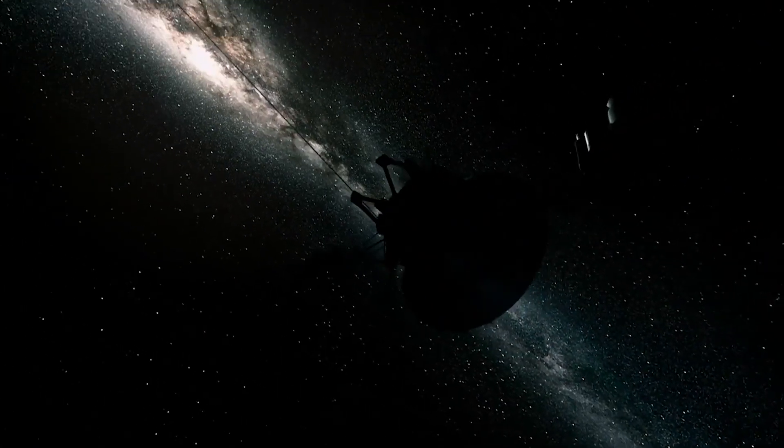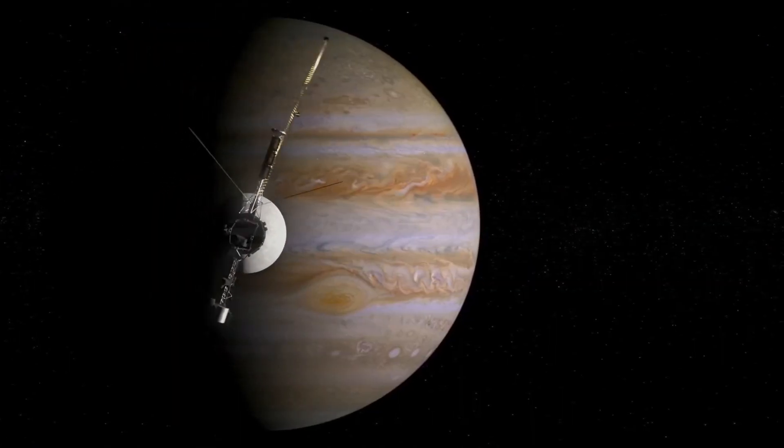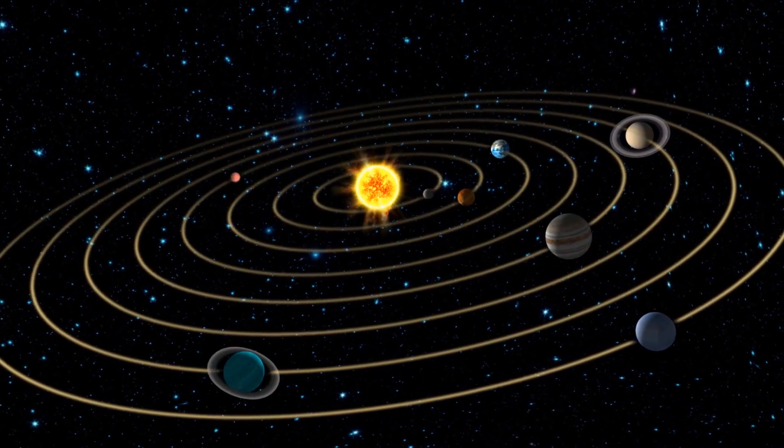Voyager 2 was the first spacecraft to directly sample the electrically charged hazes or plasmas filling interstellar space and the solar system's farthest outskirts.